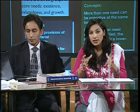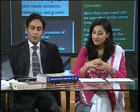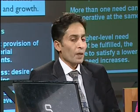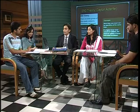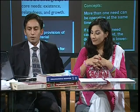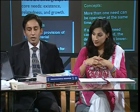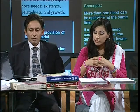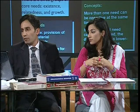ERG theory — Existence, Relatedness, Growth — groups Maslow's five needs into three major categories. Existence relates to basic physiological needs for survival. Relatedness corresponds to social needs and the desire for relationships. Growth represents the desire for personal development and higher order needs, such as achievement and recognition, potentially leading toward self-actualization. These are the three major groups within which human behavior falls.